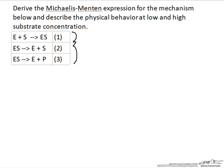Once that is in place, the substrate can come back off of the enzyme in reaction 2 to make E plus S. Or we can have the case where the enzyme-substrate complex in reaction 3 reacts to form our product P plus free enzyme. And so if we're going to start deriving a kinetic expression, we're going to treat each of these as elementary steps.